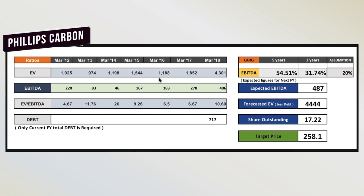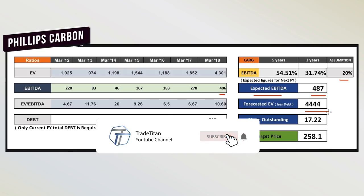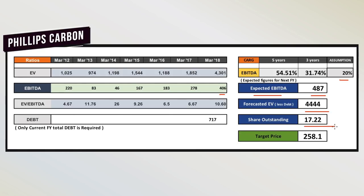Now we will derive the target price from the EV/EBITDA model. We need to calculate the expected EV/EBITDA for one-year forward, i.e. financial year 2019, assuming a 20% growth rate as a benchmark return. The current EBITDA is 406 crores, which will become 487 crores. After getting the forecasted enterprise value and dividing by the total number of shares outstanding, we get a target price of 258 as per the EV/EBITDA model.